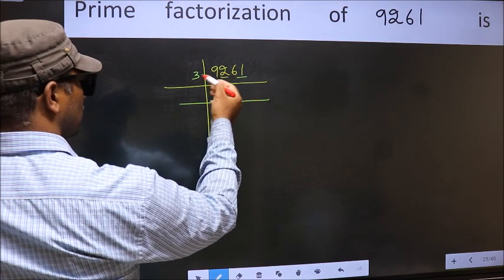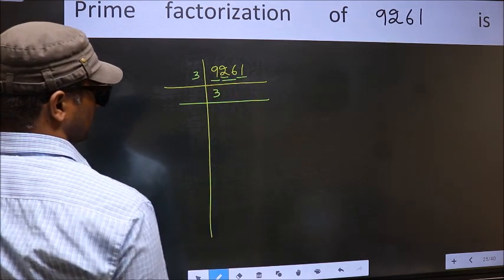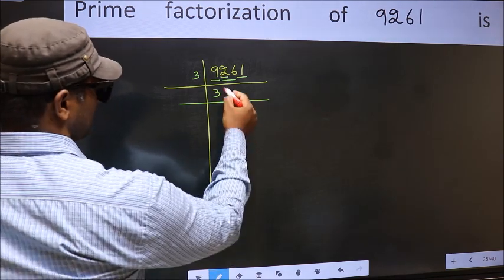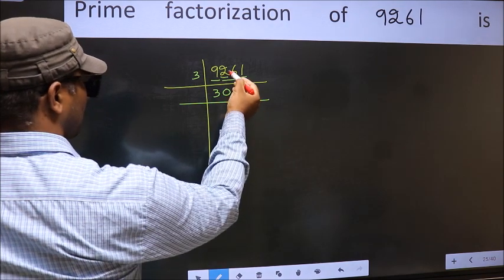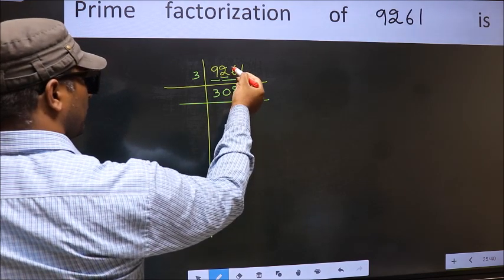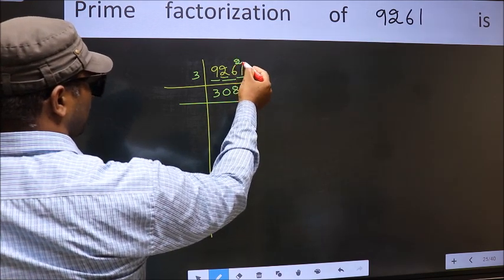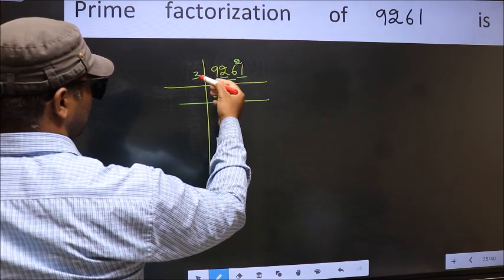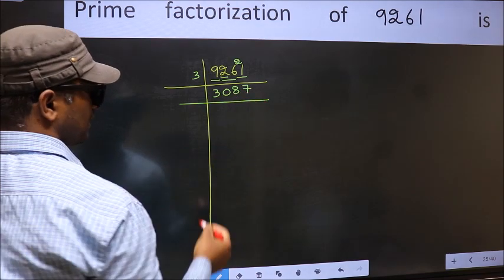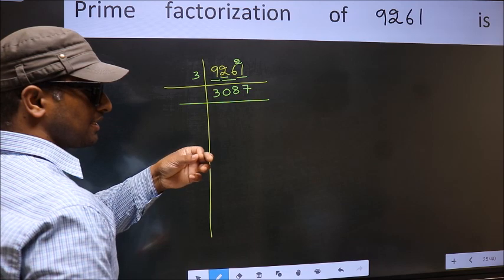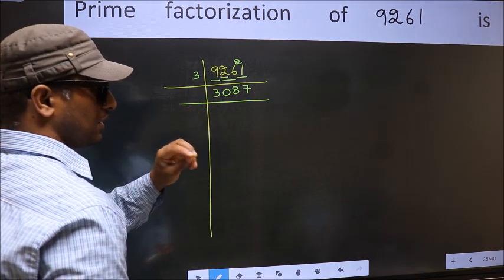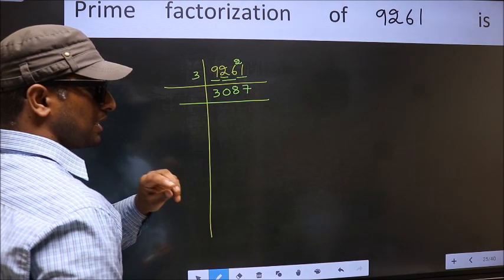The other number is 2, which is smaller than 3, so take 2 numbers: 26. Whenever you take 2 numbers, compulsorily put 0. Now 26 — a number close to 26 in the 3 table is 3 times 8 = 24. 26 minus 24 is 2, carry forward: 21. When do we get 21 in the 3 table? 3 times 7 is 21. So we check if 3087 is divisible by 3 by adding its digits: 3 plus 0 plus 8 plus 7 equals 18, and 18 is divisible by 3.